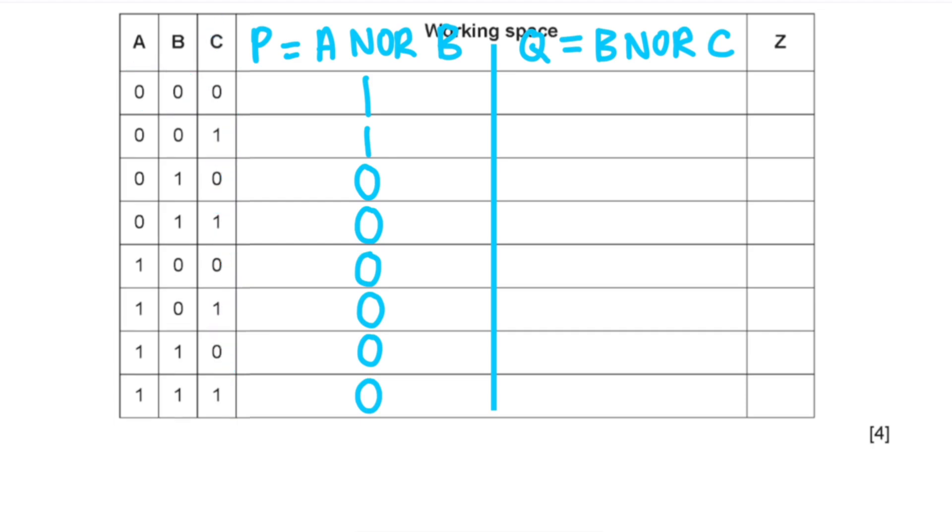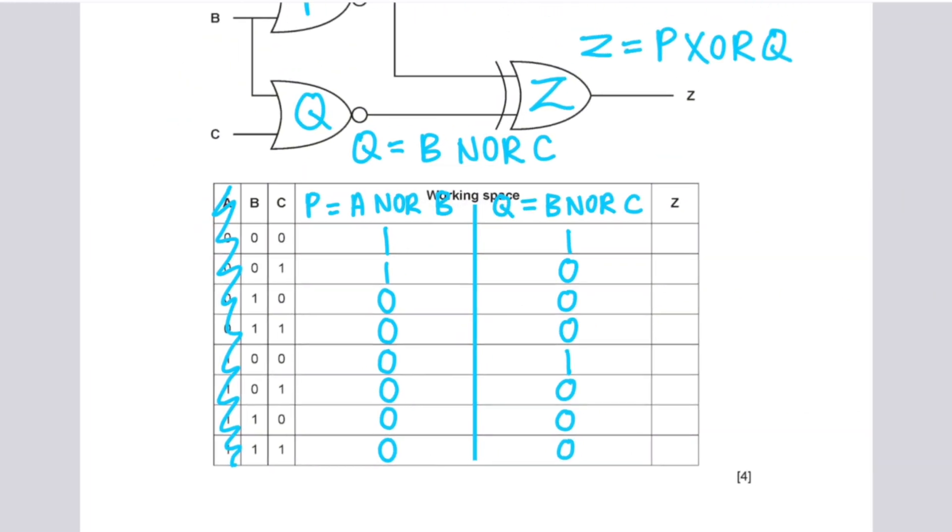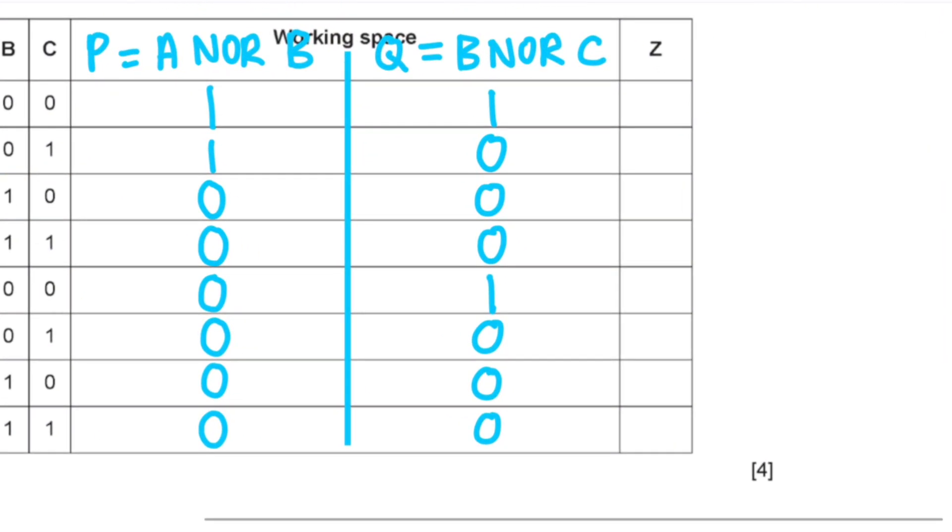And then for Q, it is B NOR C. Again, the NOR gate only produces a one if both the inputs were zero. So we cover the A column and then we just write a one every time there's two zeros. And now Z is P XOR Q. So we've already determined P, we've already determined Q. So we just perform the XOR function on each of these input combinations.